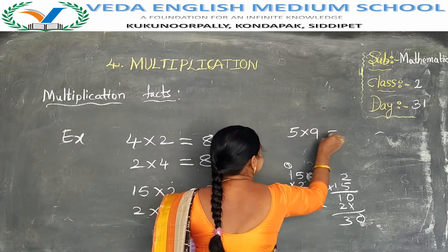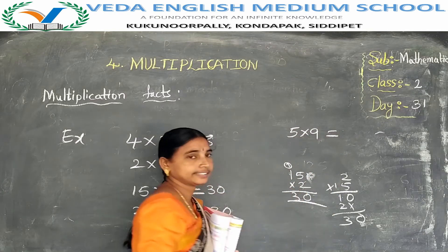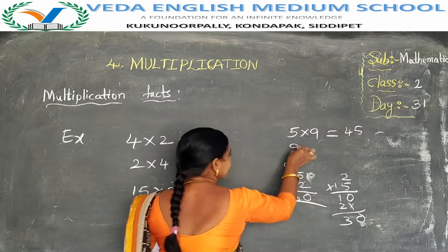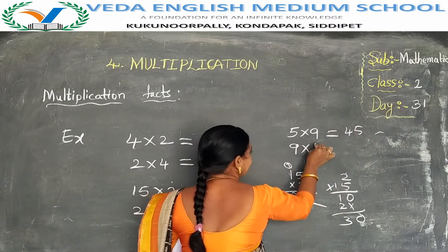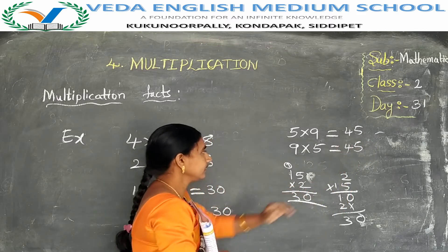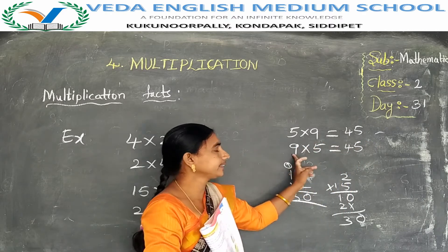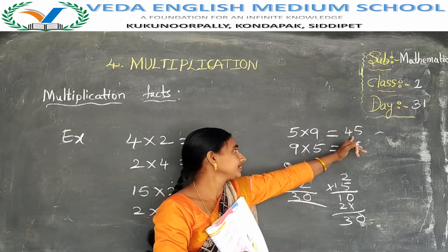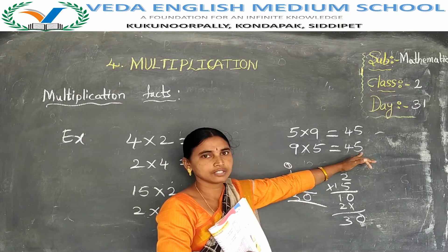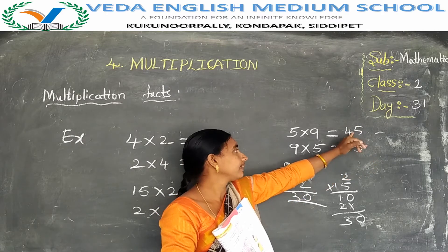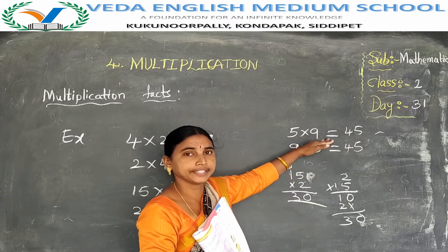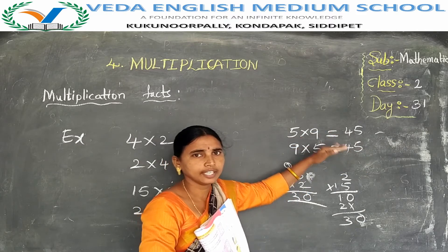One more example: 5 into 9 is 45. Now change the order: 9 into 5 is also 45. Order changes, but the answer does not change — the products are the same, both 45.